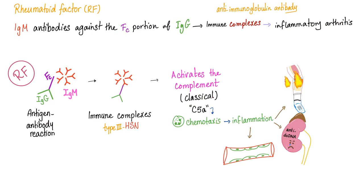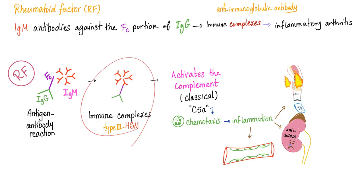Type 3 hypersensitivity in rheumatoid: the rheumatoid factor is an antibody against an antibody, leading to immune complexes that deposit, activate complement via the classical pathway — C5a, chemotaxis, inflammation — producing arthritis, nephritis, and vasculitis. Note: nephritis is common in lupus but not in rheumatoid arthritis.